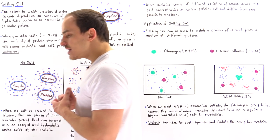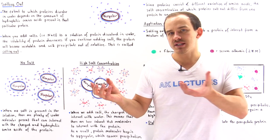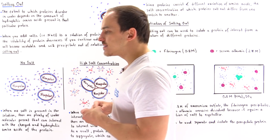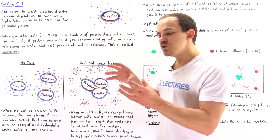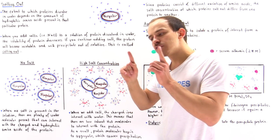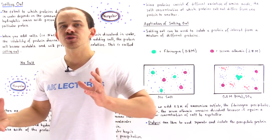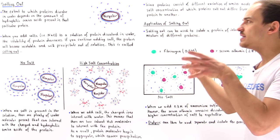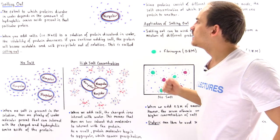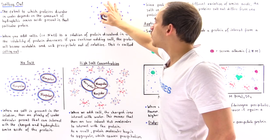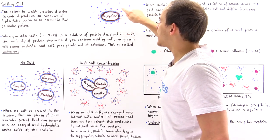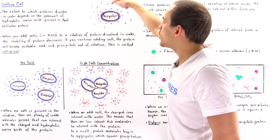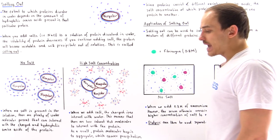Let's begin by discussing what a protein is. Proteins are sequences of amino acids, and inside our body, proteins are composed of 20 different types of amino acids. Some of these amino acids are hydrophobic and some are hydrophilic. When you place a protein into an aqueous solution, the hydrophilic amino acids will be found on the surface interacting with the polar water molecules forming hydrogen bonds, while the hydrophobic amino acids will be found inside the protein in the core. The protein core consists of a non-polar section, while the surface consists of the hydrophilic amino acids.